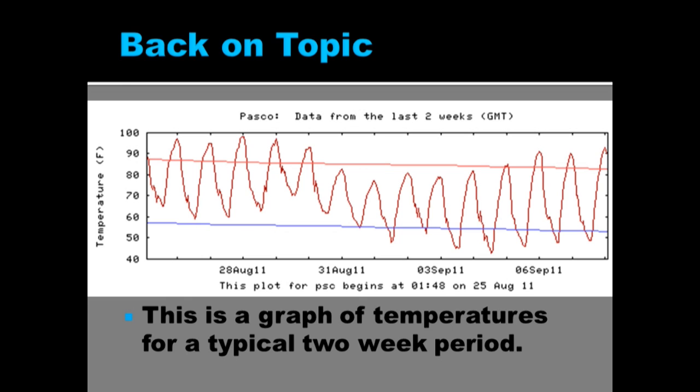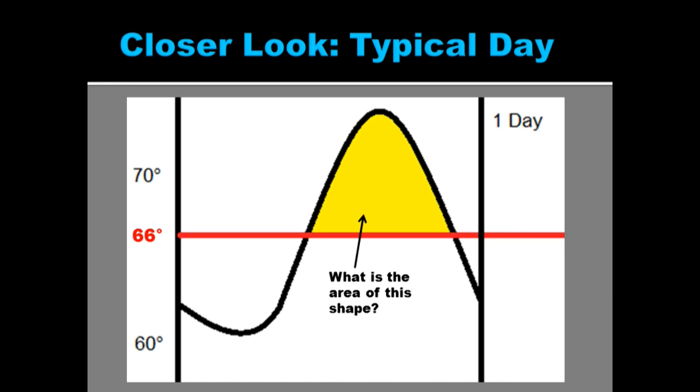So we're going to zoom in and look at a typical day where it starts off cool, getting cooler as it gets in the early morning. Then the sun comes up, it gets warmer. And then the sun starts going down and it starts cooling off again. That is a typical day.